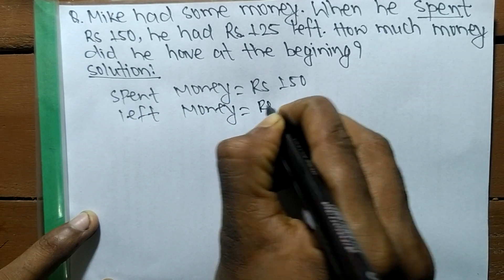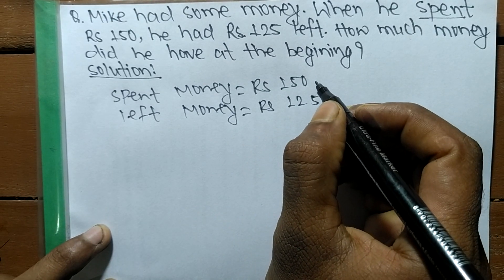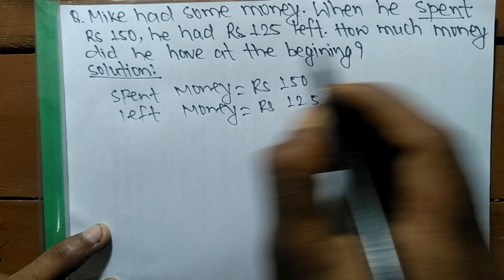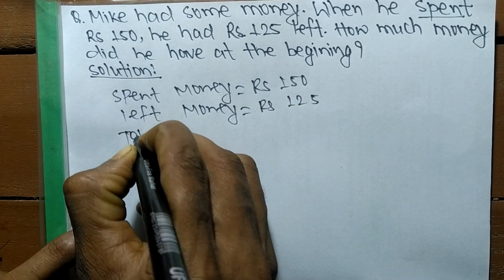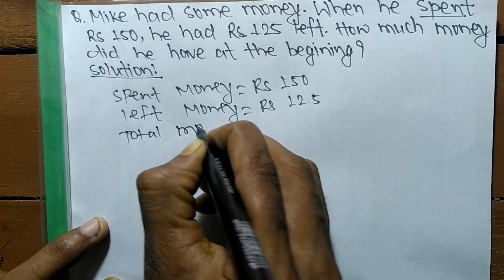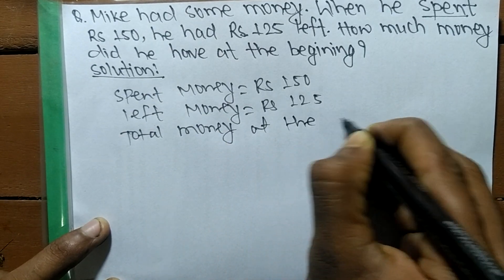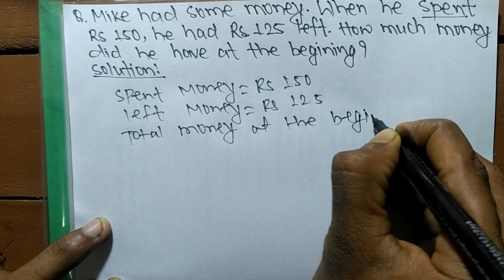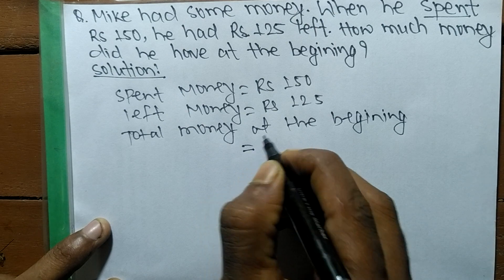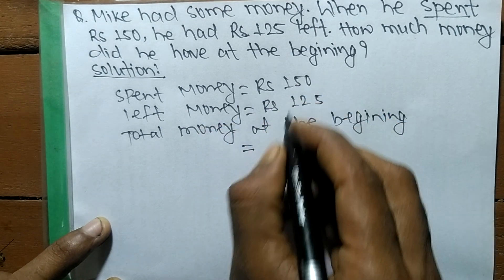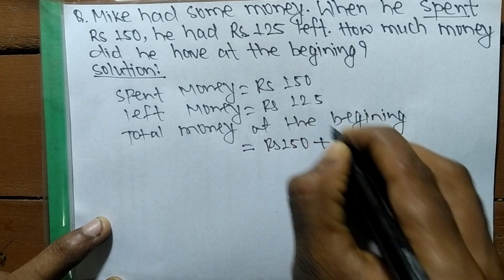We have to find out how much money he had at the beginning. So total money at the beginning is equal to the amount he spent plus what he had left. He spent RG 150 and at the beginning he has RG 125 remaining.